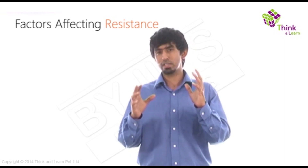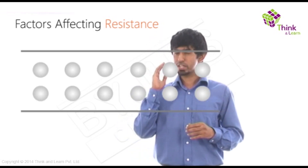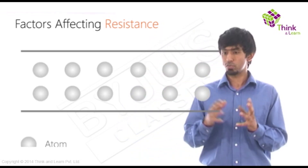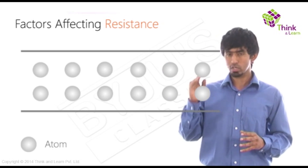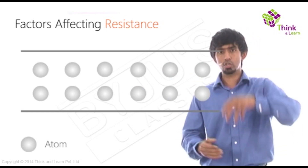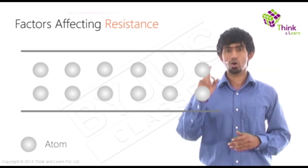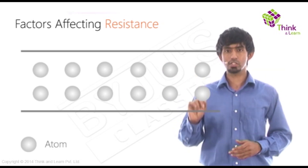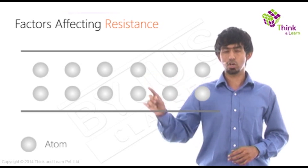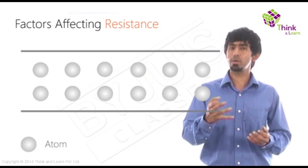I want you to use your imagination here. Let's zoom into our picture of a wire and go really, really inside until the wire begins to look like a tube. Once you go inside, you see all these positive charges arranged neatly — it's called a lattice, a metallic lattice.